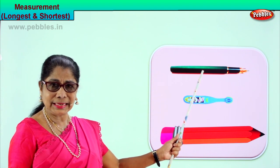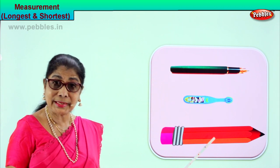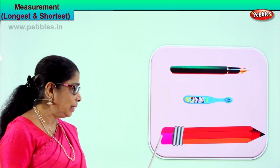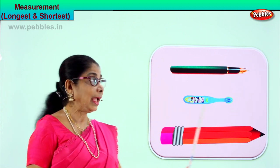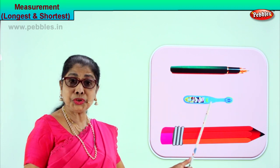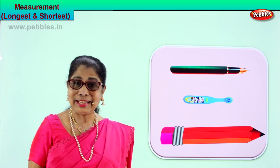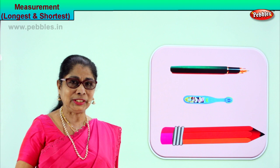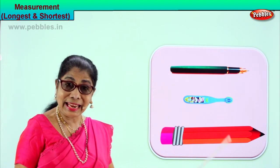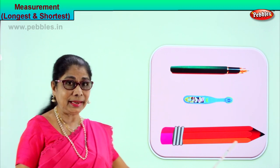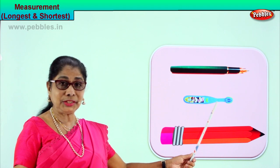Next, which is longer? Certainly the pen. But of the three, which is the longest item here? The pencil. The pencil is the longest and the toothbrush is the shortest item in this set. So we are learning two measurements: identify the shortest item, identify the longest item. Pencil is the longest. Toothbrush is the shortest. You compare the three items.